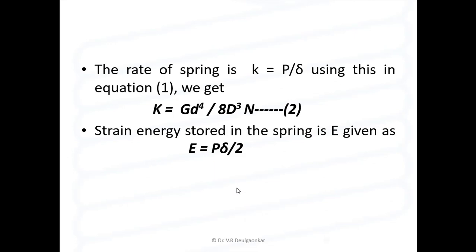We have seen these diagrams. The spring rate or stiffness k = P by delta (load over deflection). Using this in equation 1, we get k = G d to the 4th upon 8 D cubed n. The strain energy stored in the spring is given by e = P into D by 2. We will see advanced concepts in our next session.